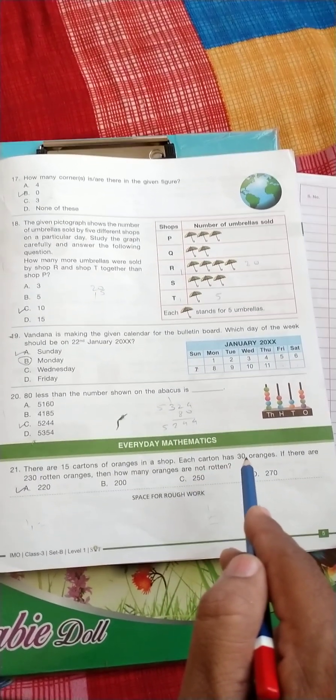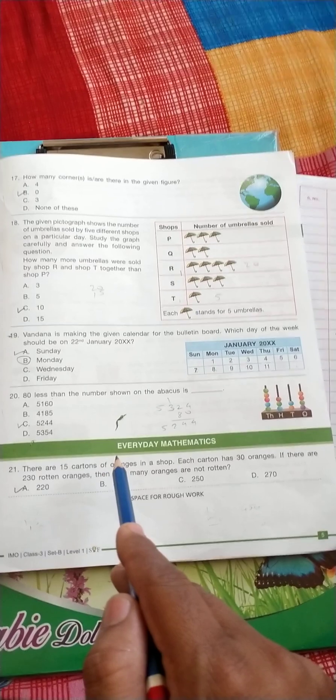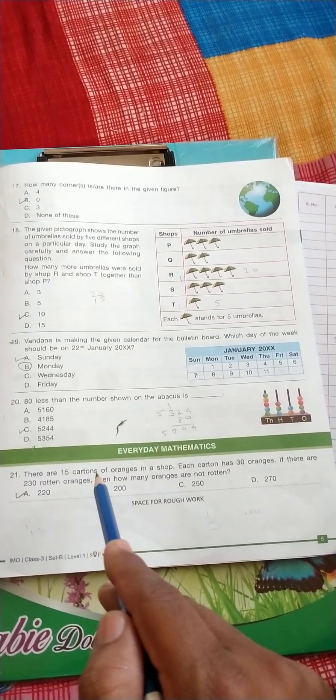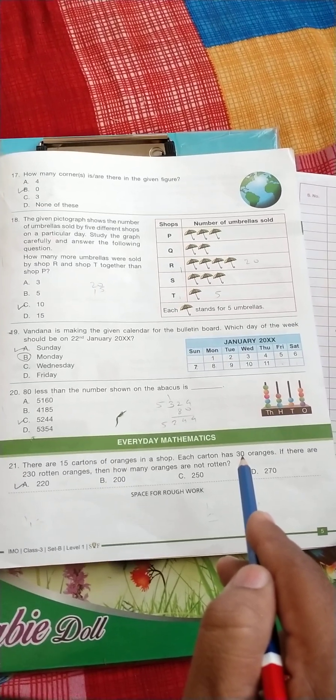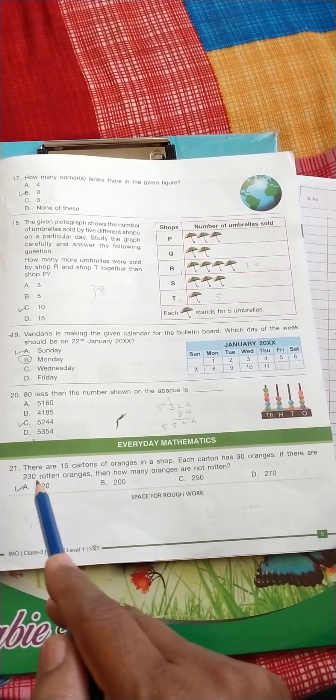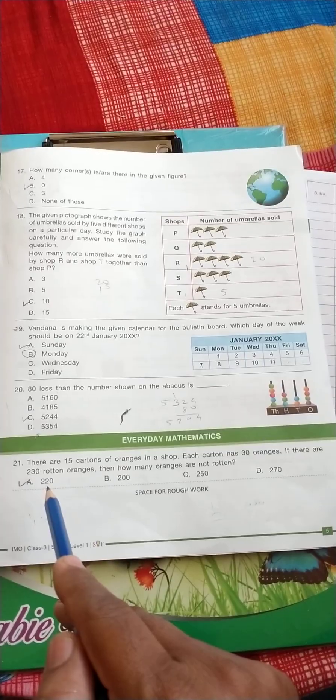So the correct answer is 15 into 30 equals 450 minus 230, so the answer is 220.